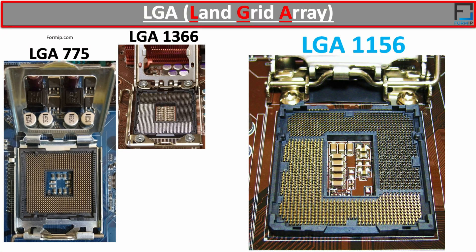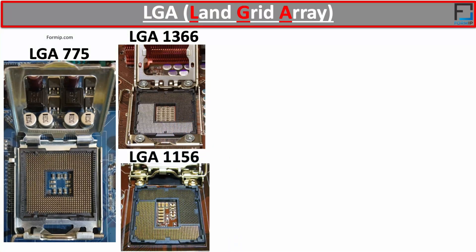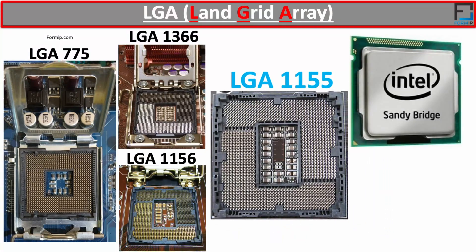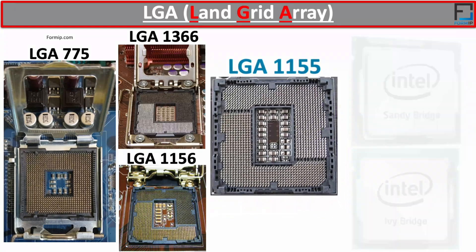The LGA-1156, called Socket H or Socket H1, was published in 2009 and contains 1,156 pins. It was the first socket used by the Intel Core i3 and i5 processors. Next is the LGA-1155, called the H2 socket, designed to replace the LGA-1156, and has 1,155 pins — one less than its predecessor. Even though the LGA-1156 and LGA-1155 have about the same number of pins, they are not compatible with each other because the notches are different. The LGA-1155 was released in 2011 and designed for Intel processors using the Sandy Bridge and Ivy Bridge architectures.